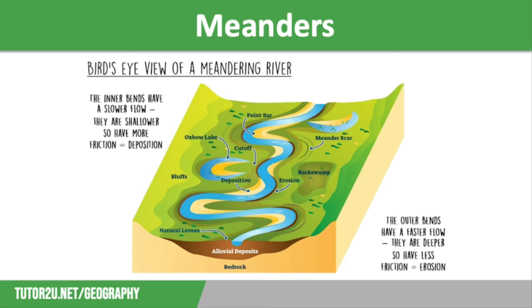Water flows at different speeds in the river channel. This means more erosion on one side and more deposition on the other. Flow downstream is affected and the faster water swings to the other side, which is known as the helicoidal flow.